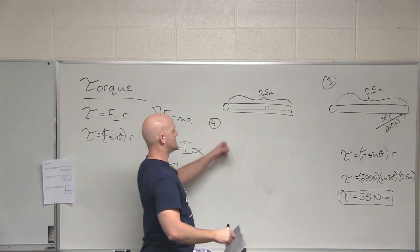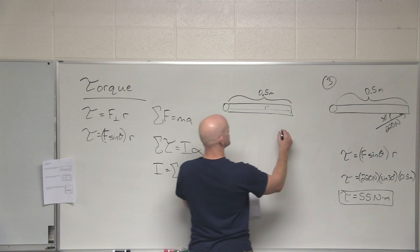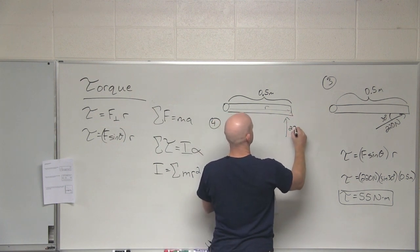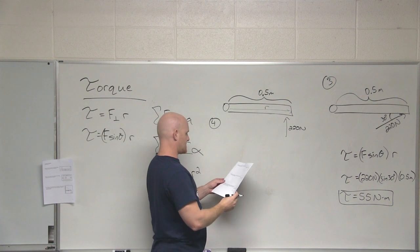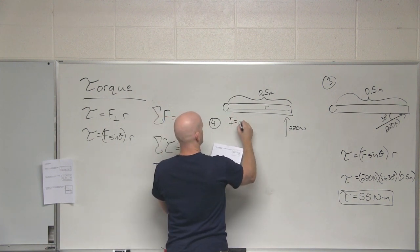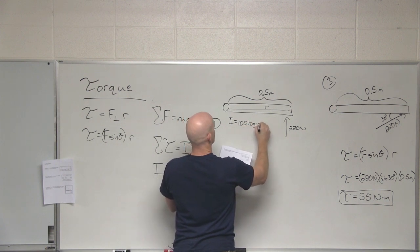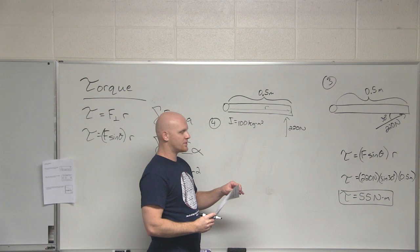So going back to the same door we had in problem number 2 here. A 220 newton force is applied perpendicularly, 0.5 meters from the hinge on this door again. So if the moment of inertia of this door is 100 kilogram meters squared, the question is what is the resulting angular acceleration of the door?